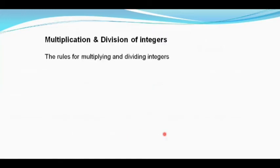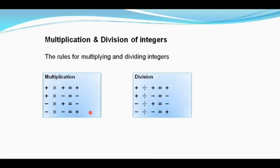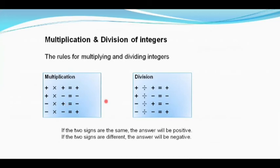Let us understand multiplication and division of integers. The rules are: positive times positive gives positive; positive times negative gives negative; negative times positive gives negative; and negative times negative gives positive. The division rules are the same: positive divided by positive is positive; positive divided by negative is negative; negative divided by positive is negative; negative divided by negative is positive.